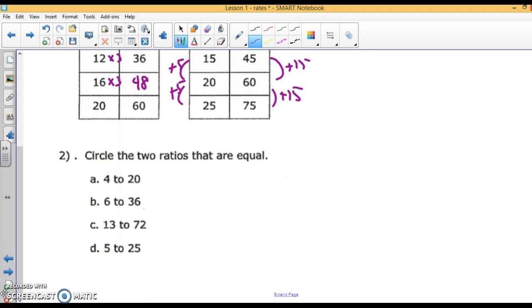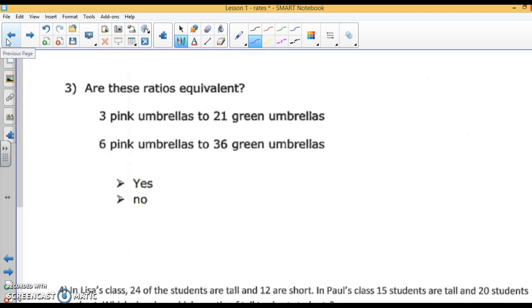Circle two ratios that are equal. Well, 4 to 20 would be 1/5. 6 to 36 would be 1/6. 13 to 72 is 13 to 72, it won't reduce. And 5 to 25 is 1/5. So which two are the same? A and D. What are the equivalent ratios? Well, 3 pink umbrellas to 21 green is 3 to 21, which is 1/7. 6 to 36 is 1/6. So are they the same? No.